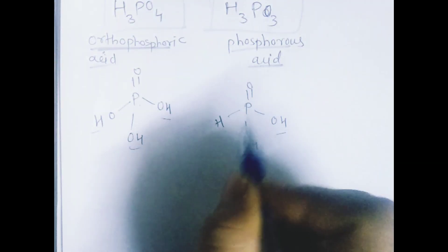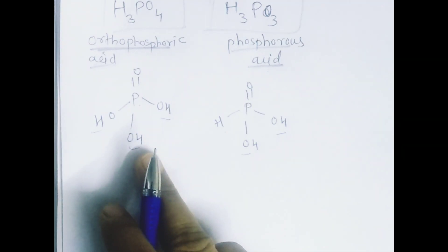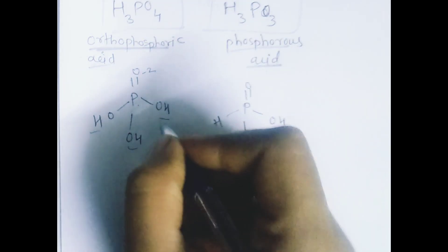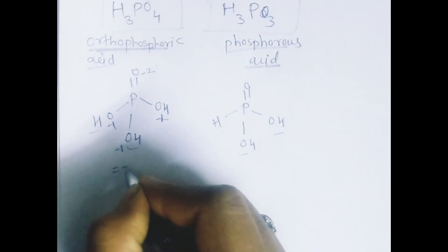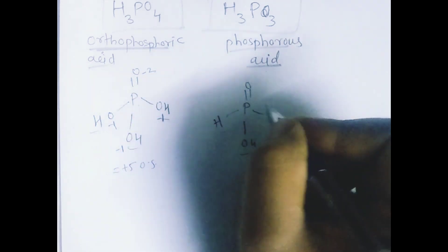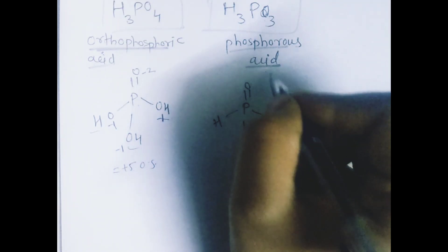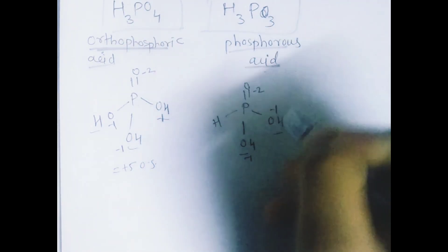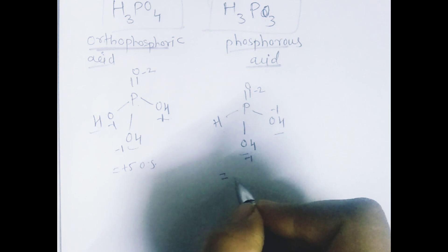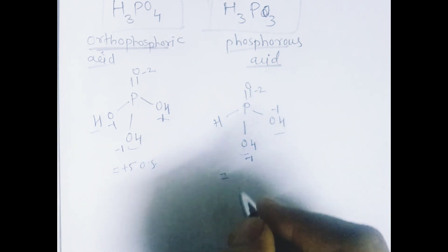For phosphoric acid H3PO4, the double bond contributes minus two and the three OH groups contribute minus one each, giving a total of minus five, so the oxidation state of phosphorus is plus five. For phosphorous acid H3PO3, similarly the double bond is minus two and two OH groups give minus one each, making the oxidation state plus four.